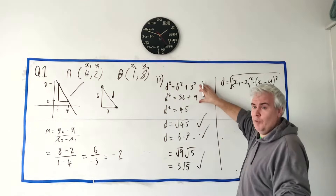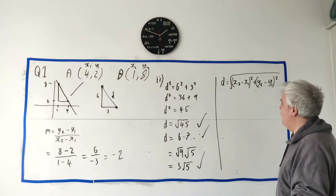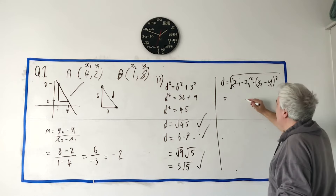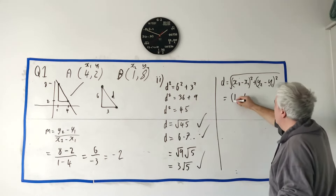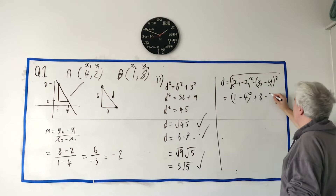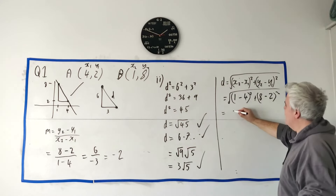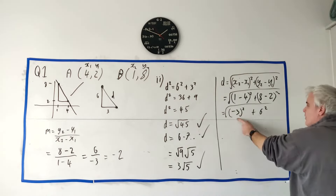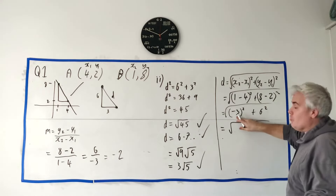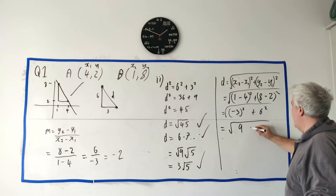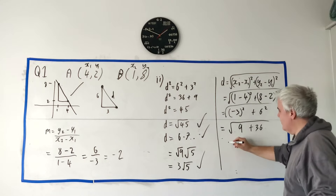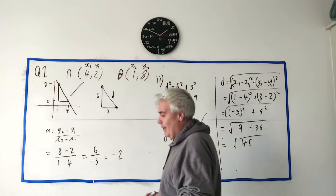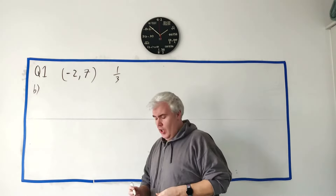Using the distance formula: d = √((x2 - x1)² + (y2 - y1)²) = √((1-4)² + (8-2)²) = √((-3)² + 6²) = √(9 + 36) = √45. We get the exact same answer as Pythagoras, so feel free to do it either way.